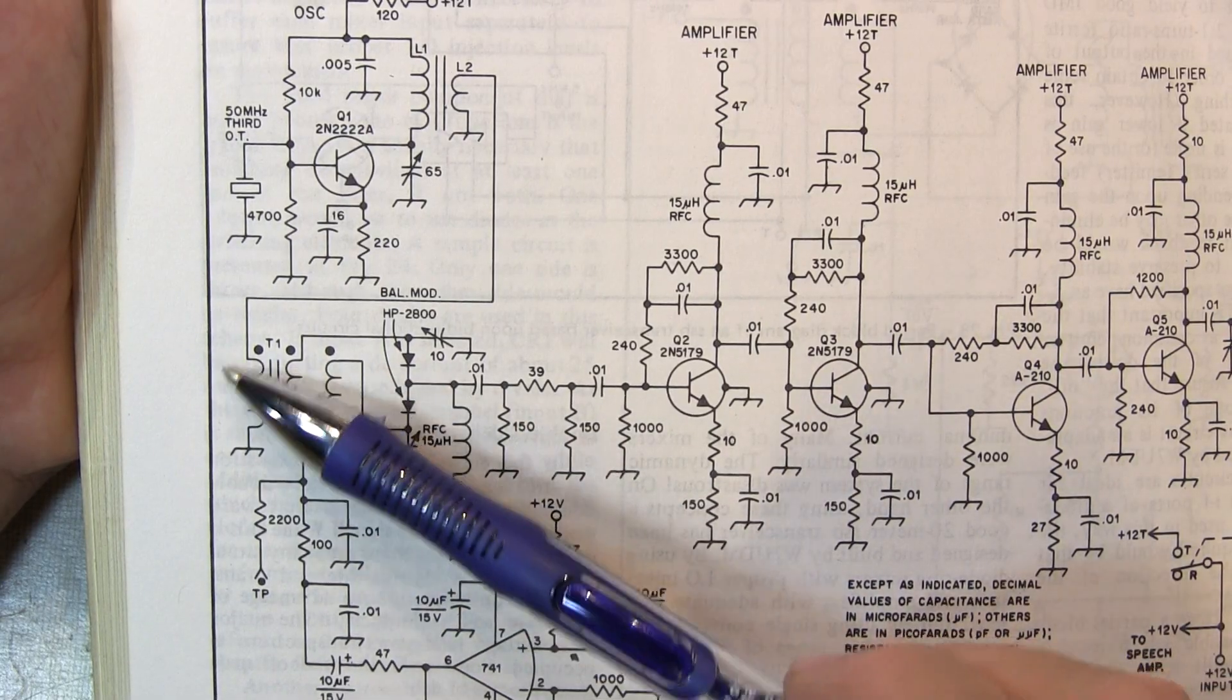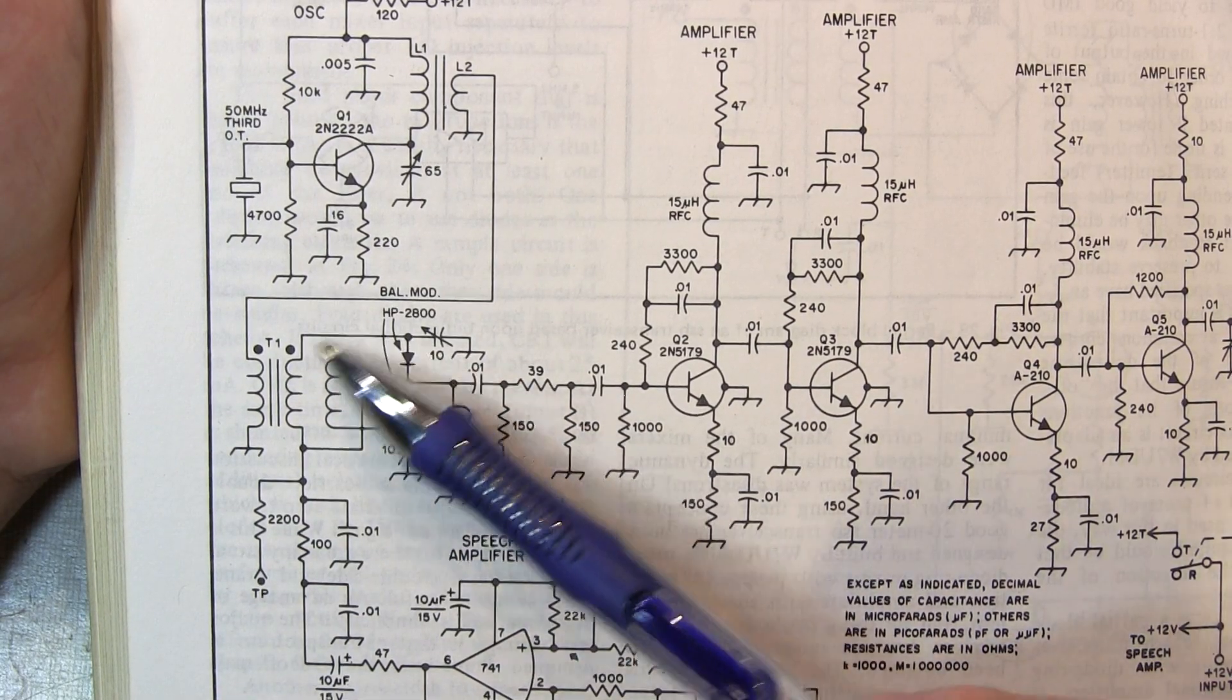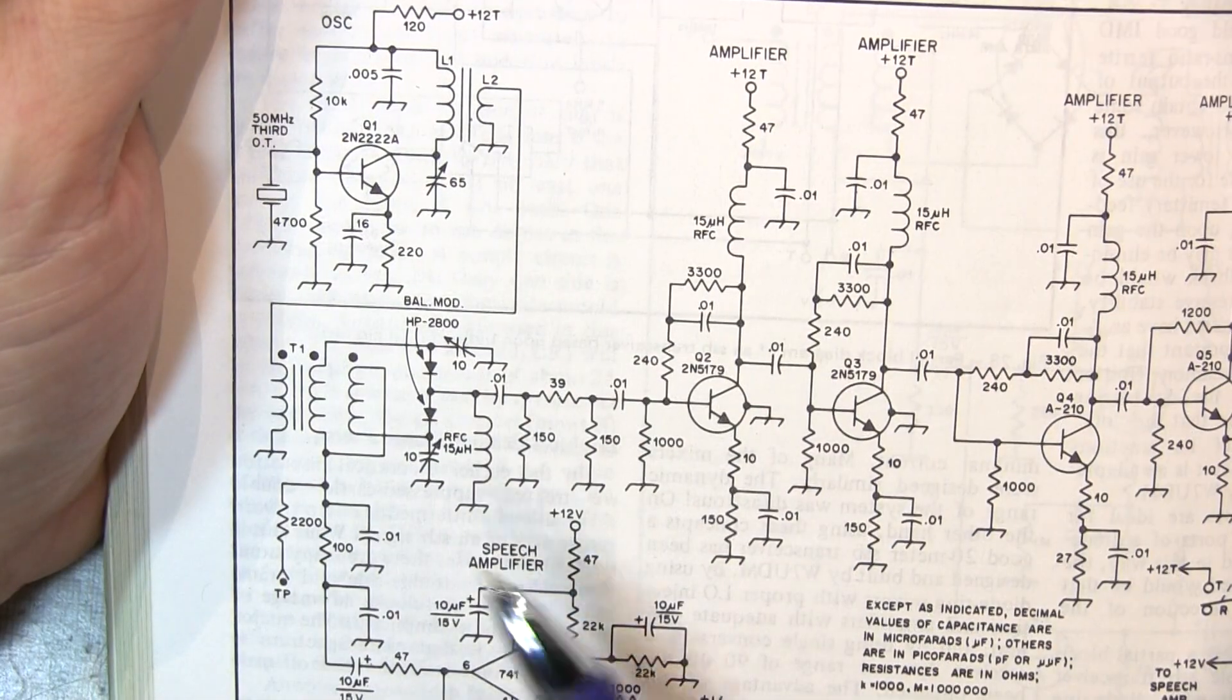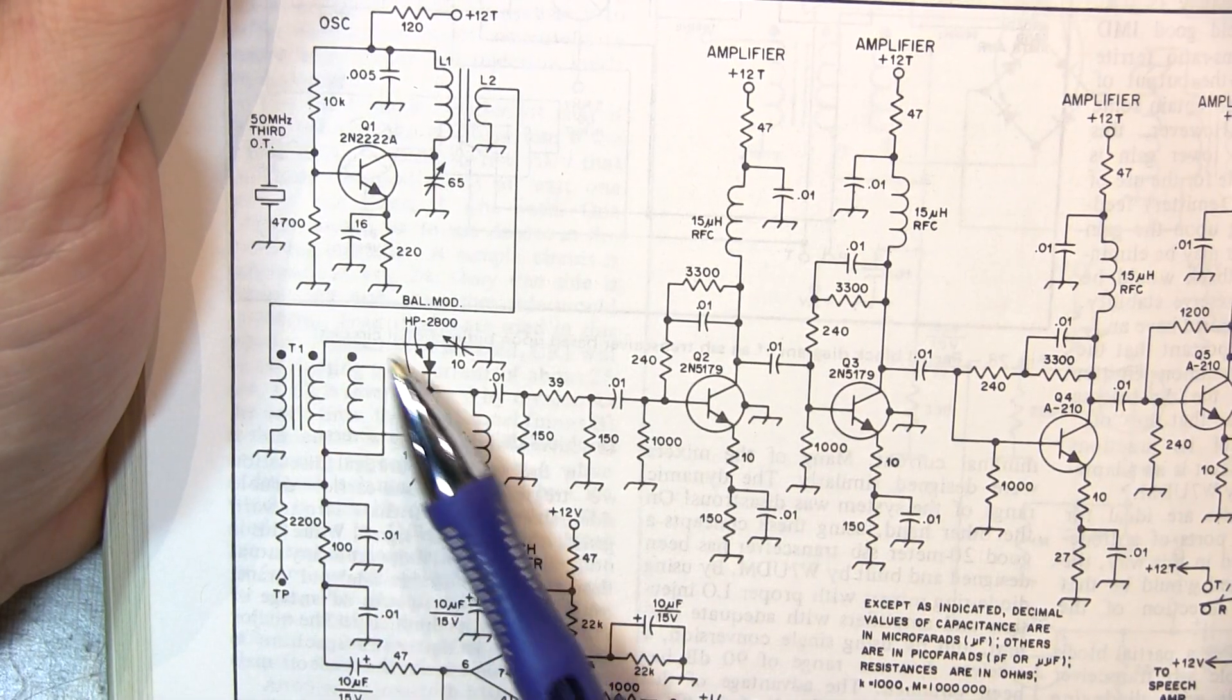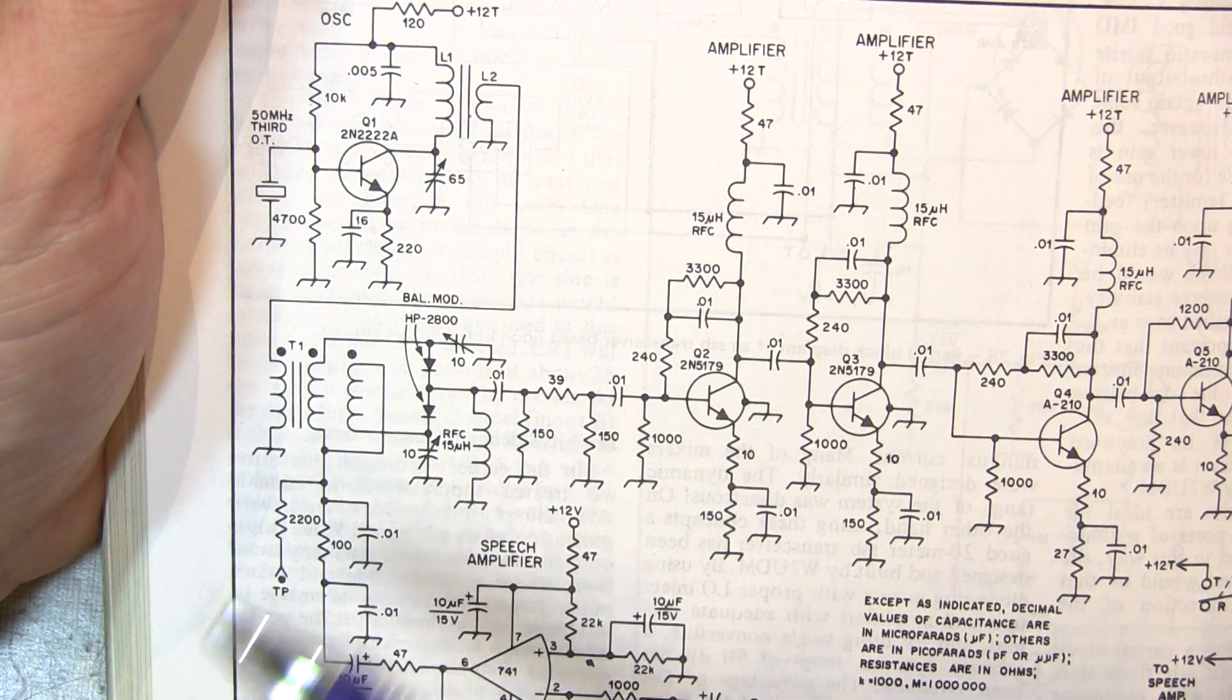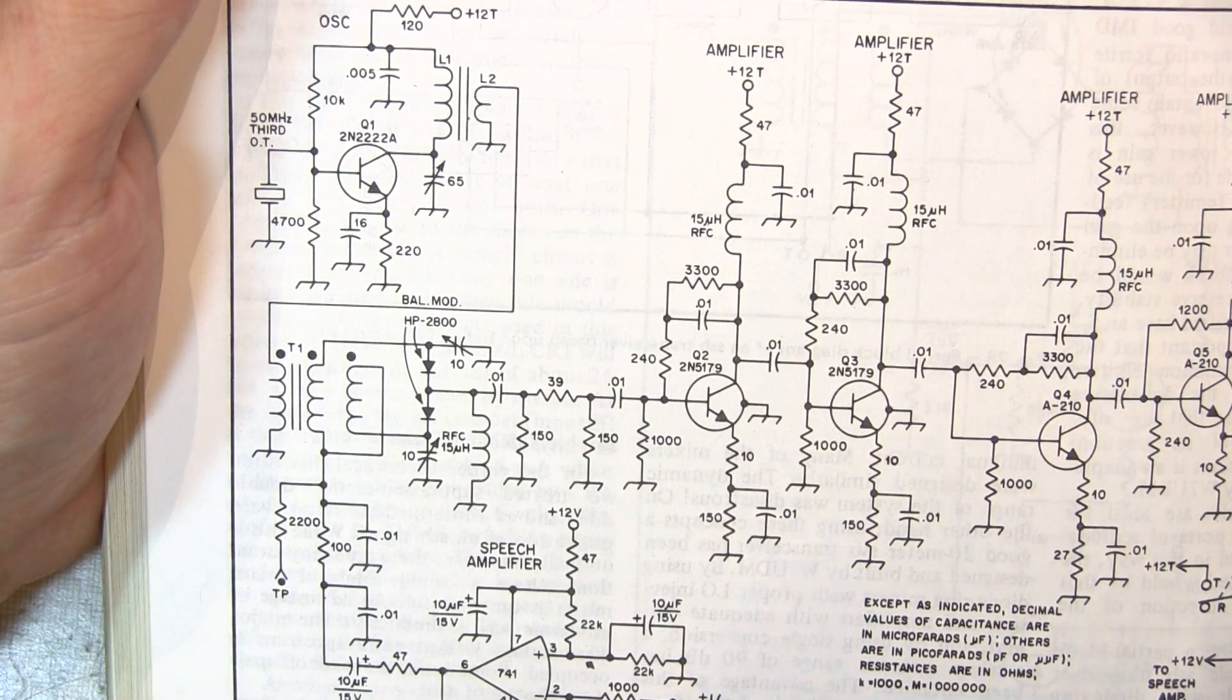So if we were to build this, how would we keep all these windings straight when putting this transformer together and get all the phasing right? It's actually very easy.